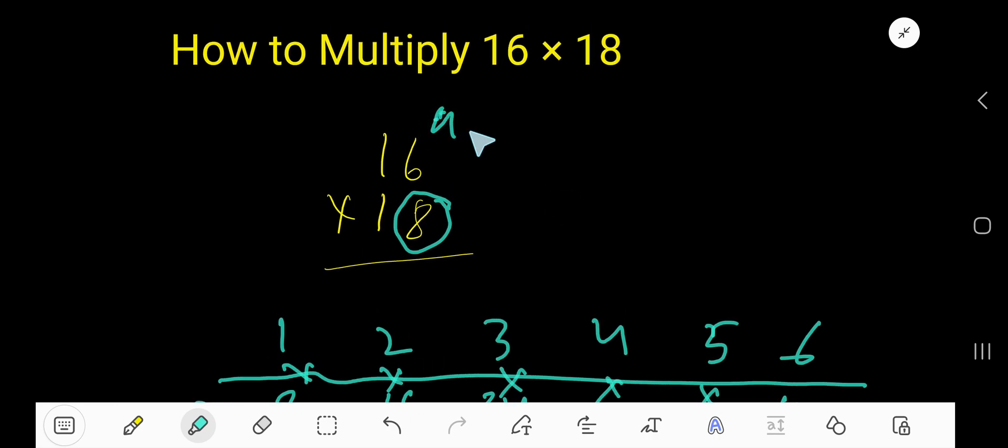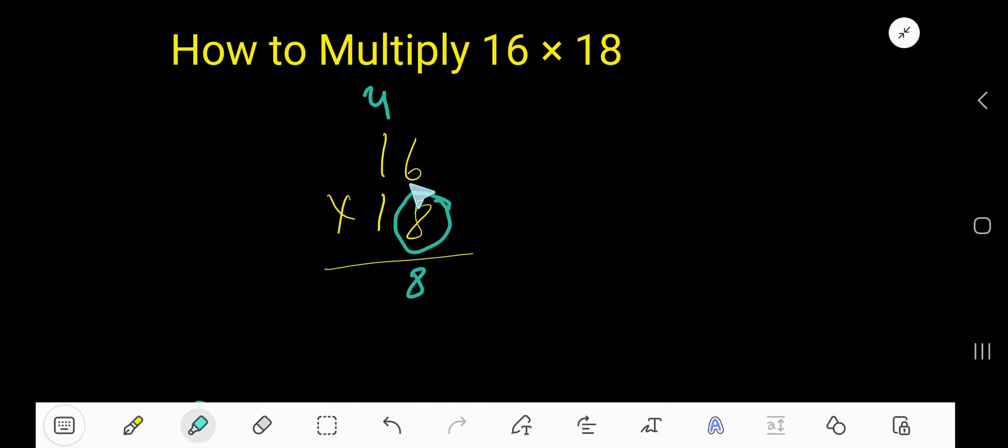So, write 48, write 8 here and carry 4 to the next column. So, 8 times 1, 8 plus 4, that is 12.